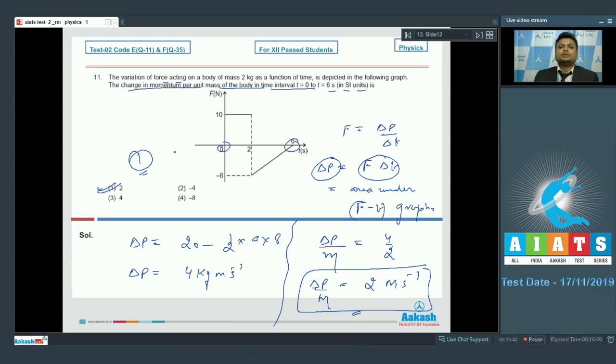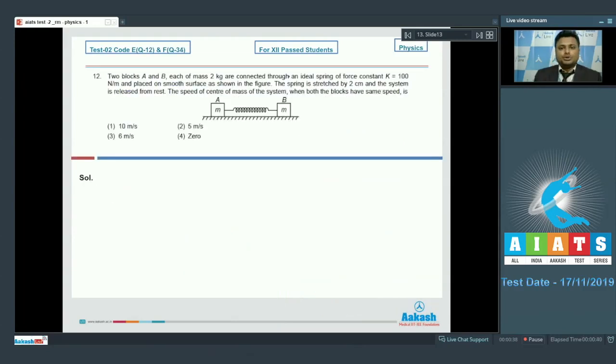Moving on to the next question, that is question number 12. Two blocks A and B, each of mass 2 kg, are connected through an ideal spring of force constant k equals 100 newton per meter and placed on a smooth surface as shown in figure.